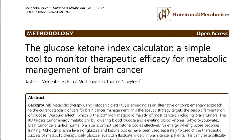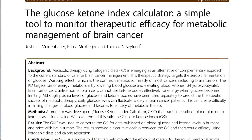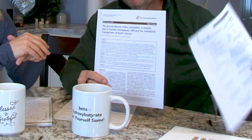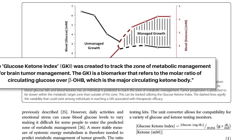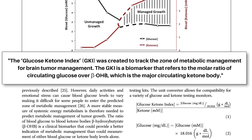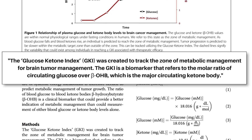The glucose ketone index was started by Thomas Seyfried from Boston College. He developed this — this is the only scholarly paper on it, and there is a patent application as well. He's using this as a measure to more accurately predict how well a therapeutic ketogenic diet will work for the treatment specifically of brain tumors.